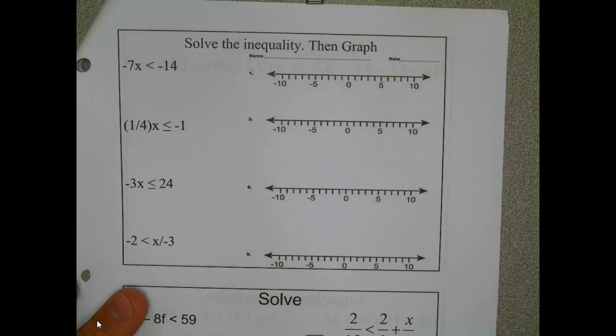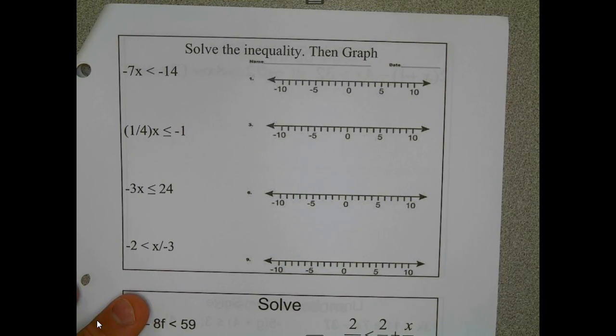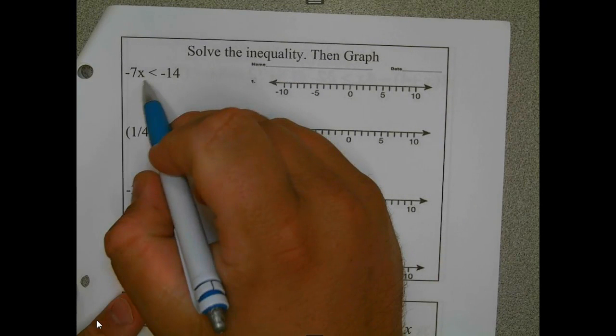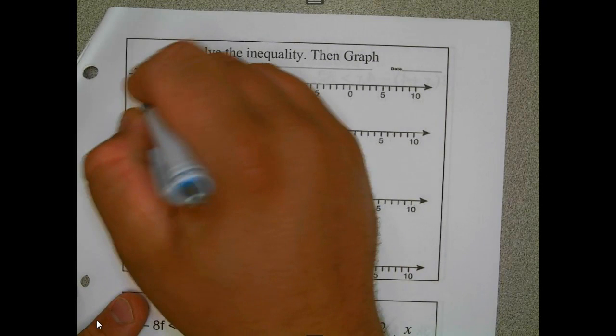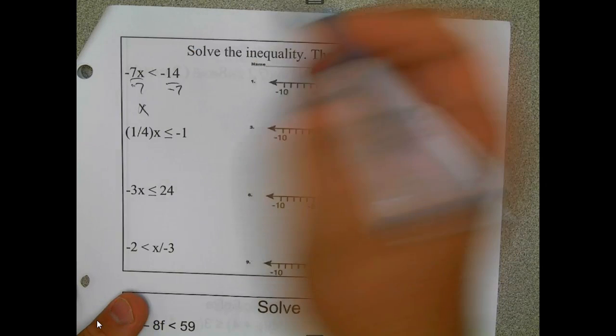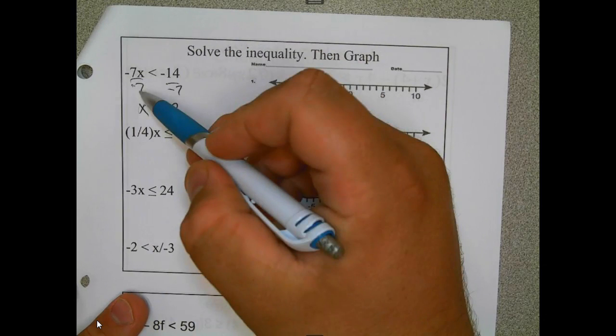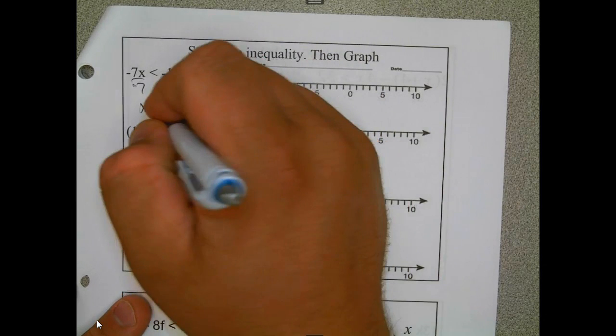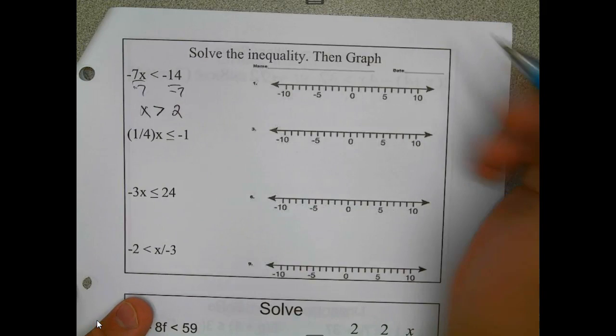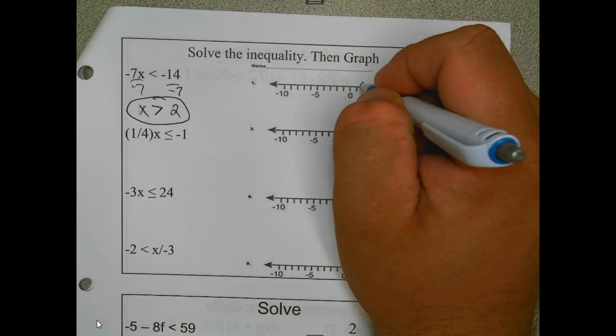I'm going to flip to this example so that we can talk about how you graph it. For a division that's a multiplication, those are the ones that are the hardest. So I'm going to divide by negative 7, so I get -14 divided by -7, and that's 2. But remember, I divided by a negative so I'm going to flip the sign.